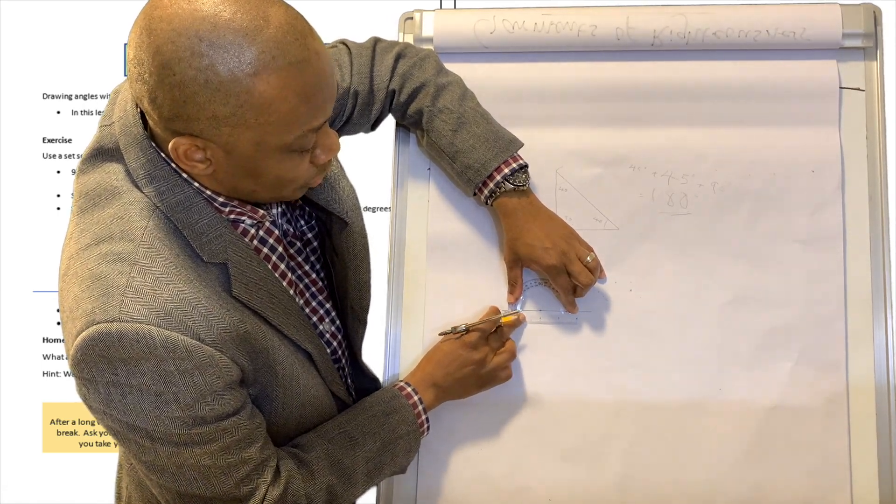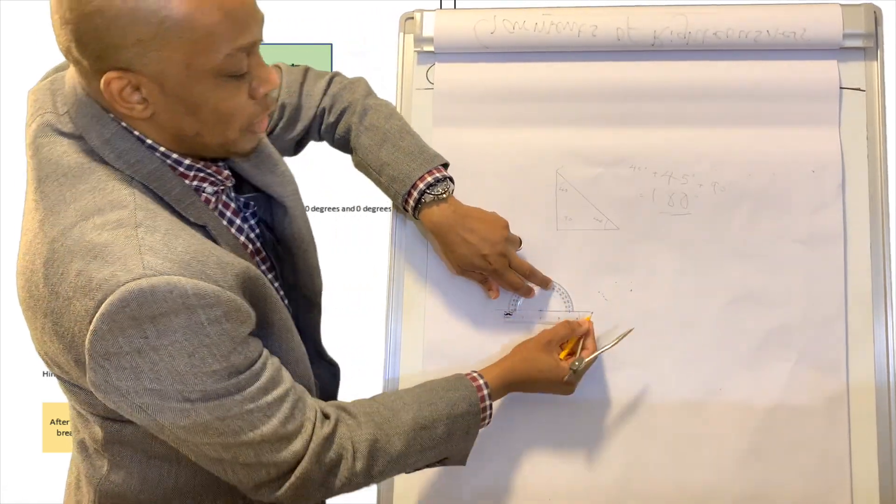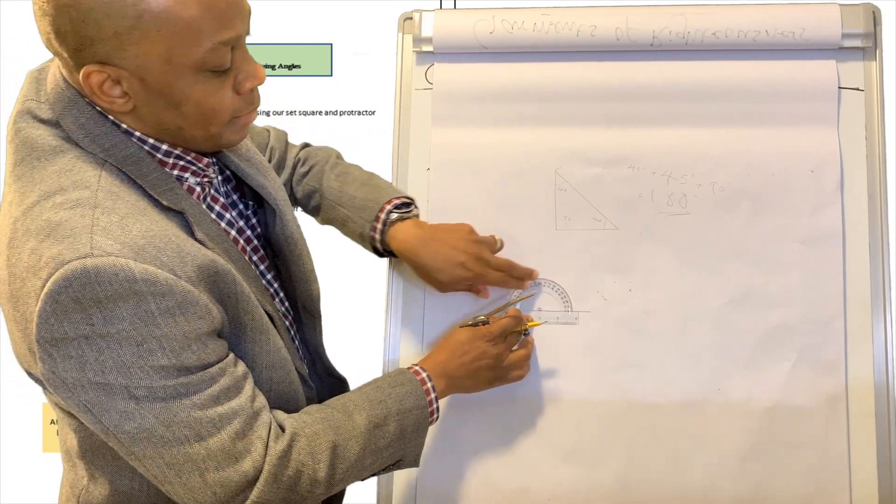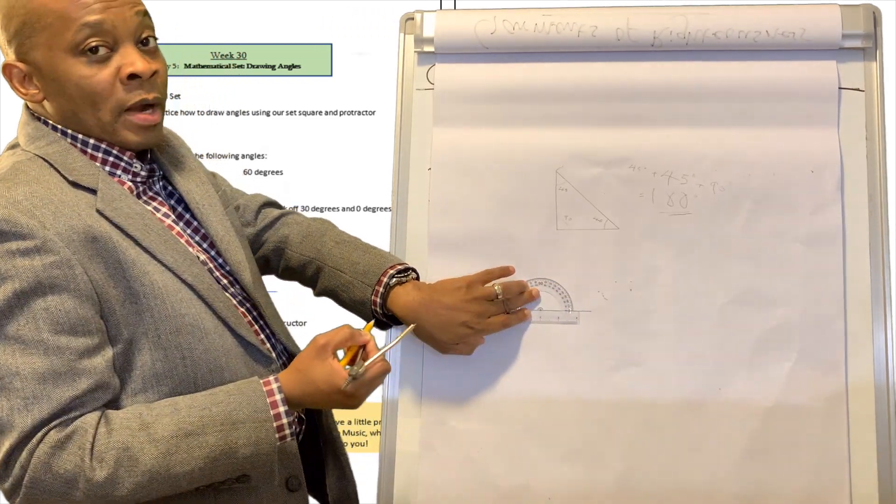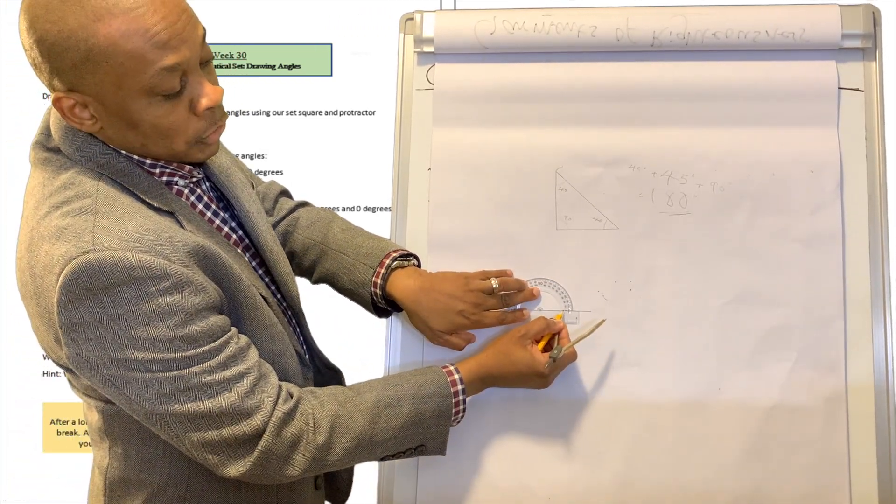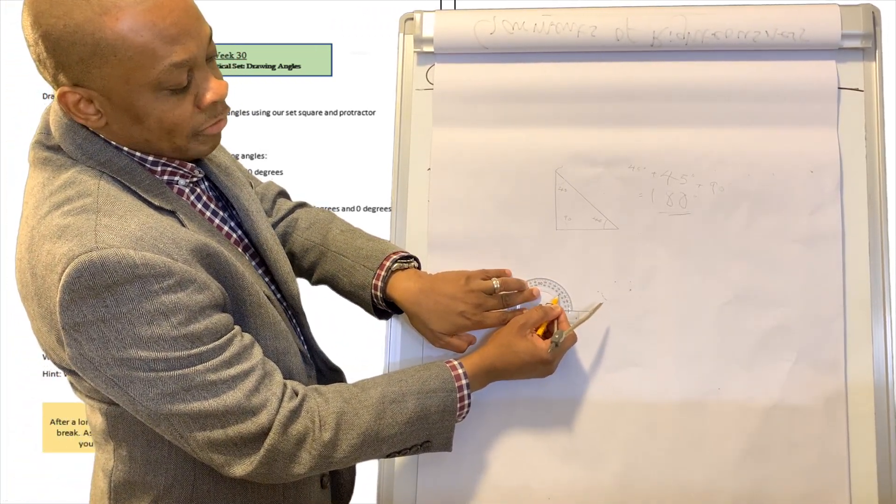And I am going to make sure that the protractor lines up with the straight line that I just drew. Then I'm going to start counting from zero up until I get to 60. You can count from the left or you can count from the right. It doesn't matter. So zero, 10, 20, 30, 40, 50, 60.